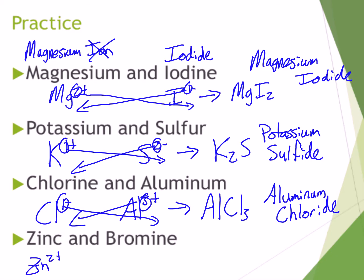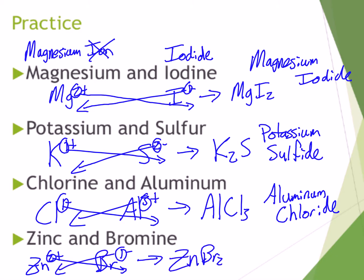Zinc has a 2+ charge — it's part of our mini staircase on the colored periodic table, along with silver, zinc, cadmium, aluminum, and gallium. These all have known charges and are not transition metals. Bromine is Br1−. Using the crisscross method, our formula is ZnBr2, and our name is zinc bromide.